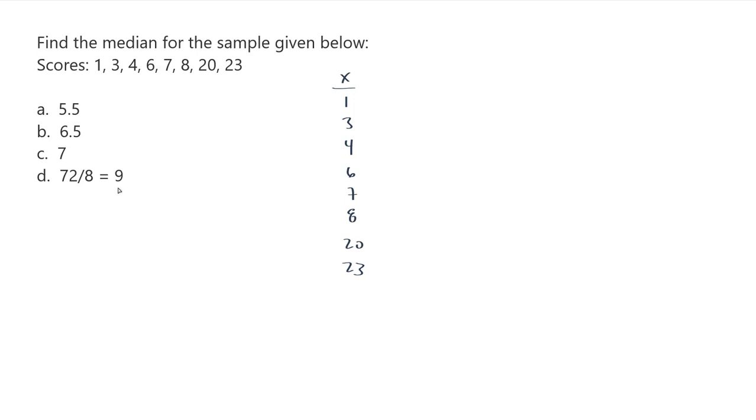Now I believe that 72 divided by 8 is the average. There's probably 1, 2, 3, 4, 5, 6, 7, 8 scores, and I'd be willing to bet that when you add them up, they come out to have a total of 72. And so this is the mean, not the median. So that's not what we're looking for.